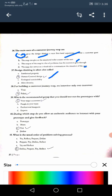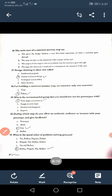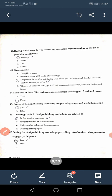Thirty-seventh: Design thinking is often called as human-centered design. Thirty-eighth: For building a customer journey map we interview only one customer? False. Thirty-ninth: Who is the recommended group you should test? Your target customer. Fortieth: During which step do you allow authentic audience to interact with your prototype and give feedback? Testing. Forty-first: What is the usual order of problem solving process? It's D, define, prepare, try and reflect. Forty-second: During which step do you create interactive representation of model of your idea solution? So it is prototype.